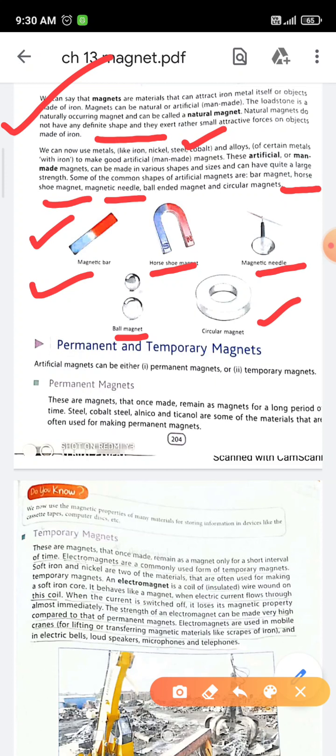Which materials are used for making permanent magnets? Steel, cobalt, steel alnico, and tycoon. These are the materials used for making permanent magnets.